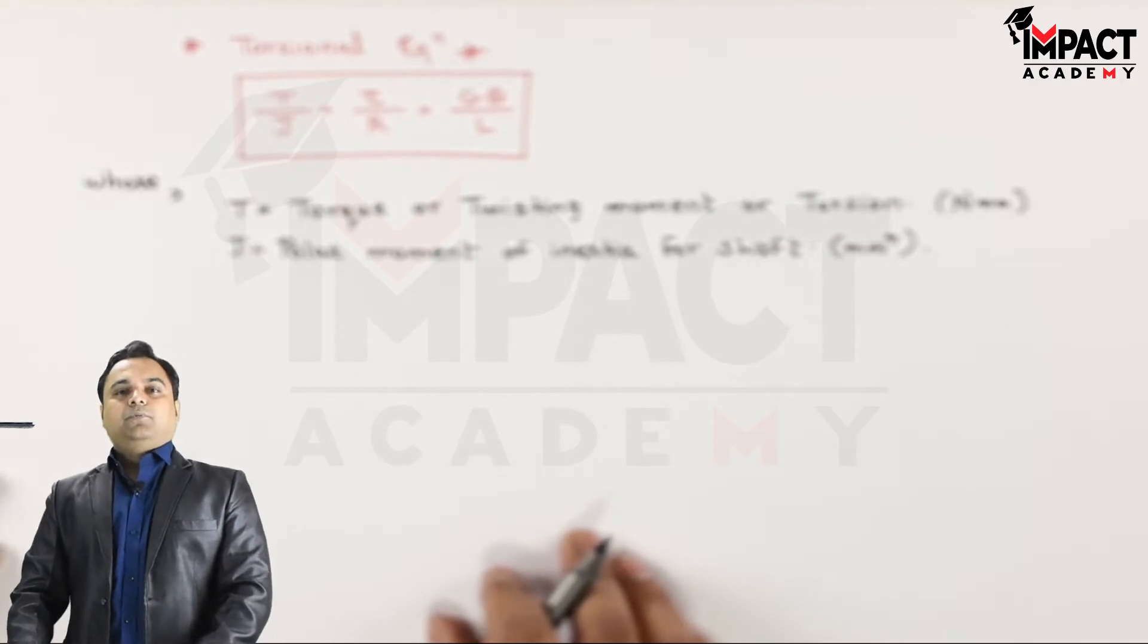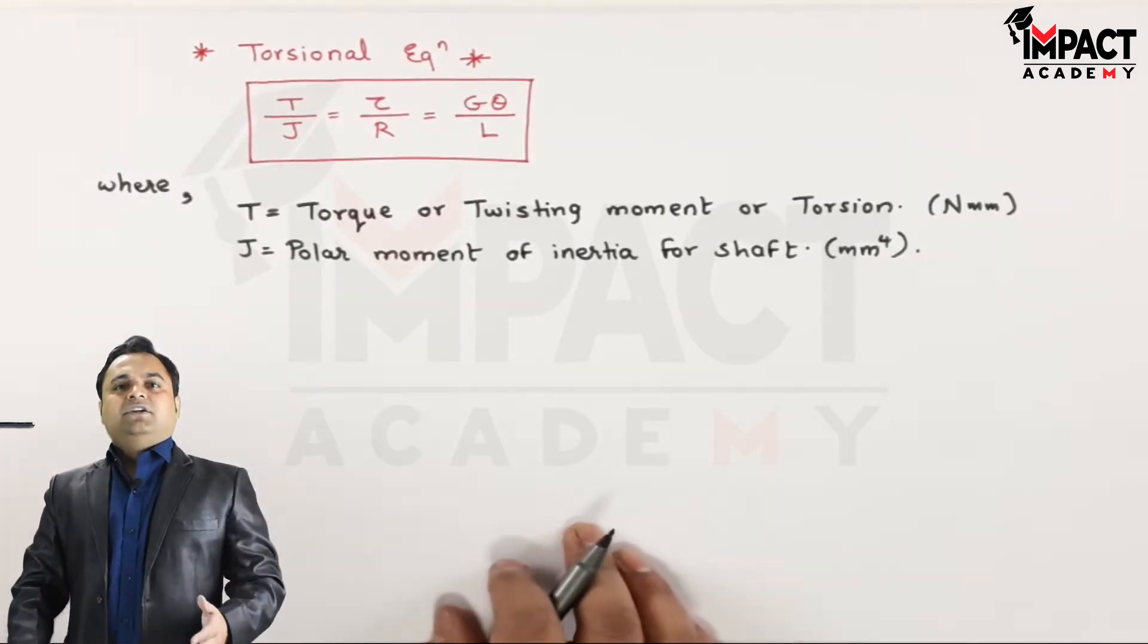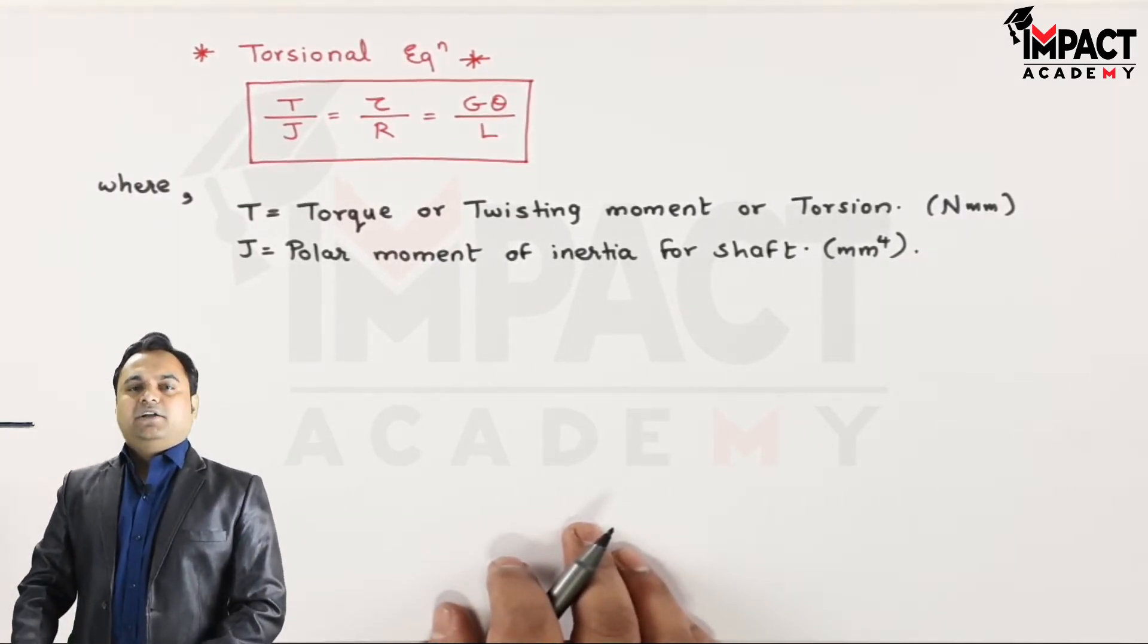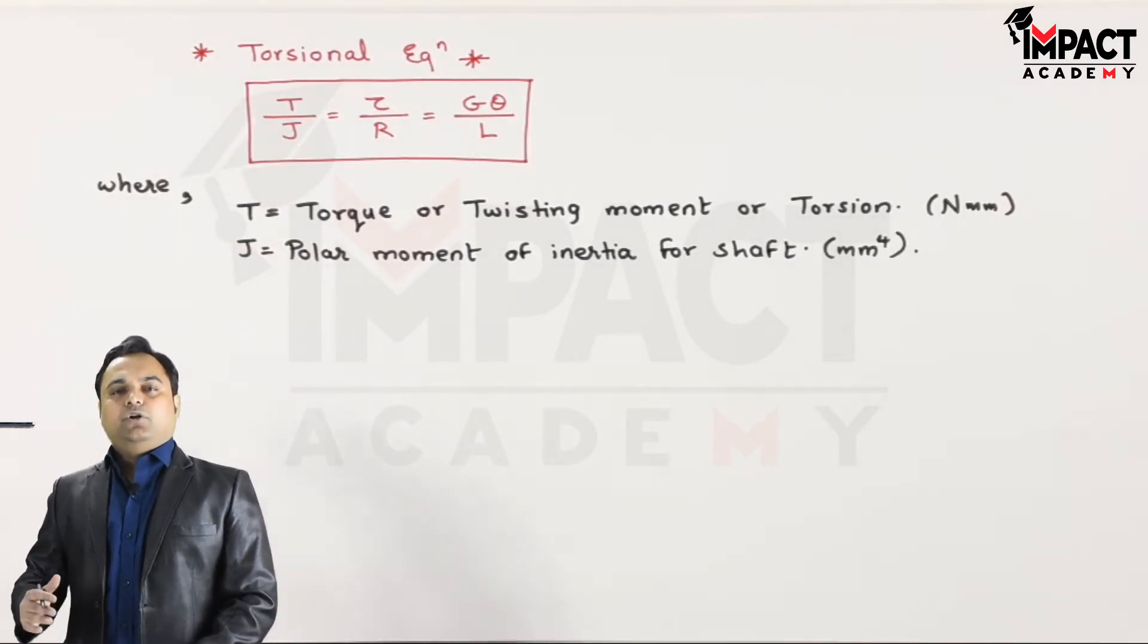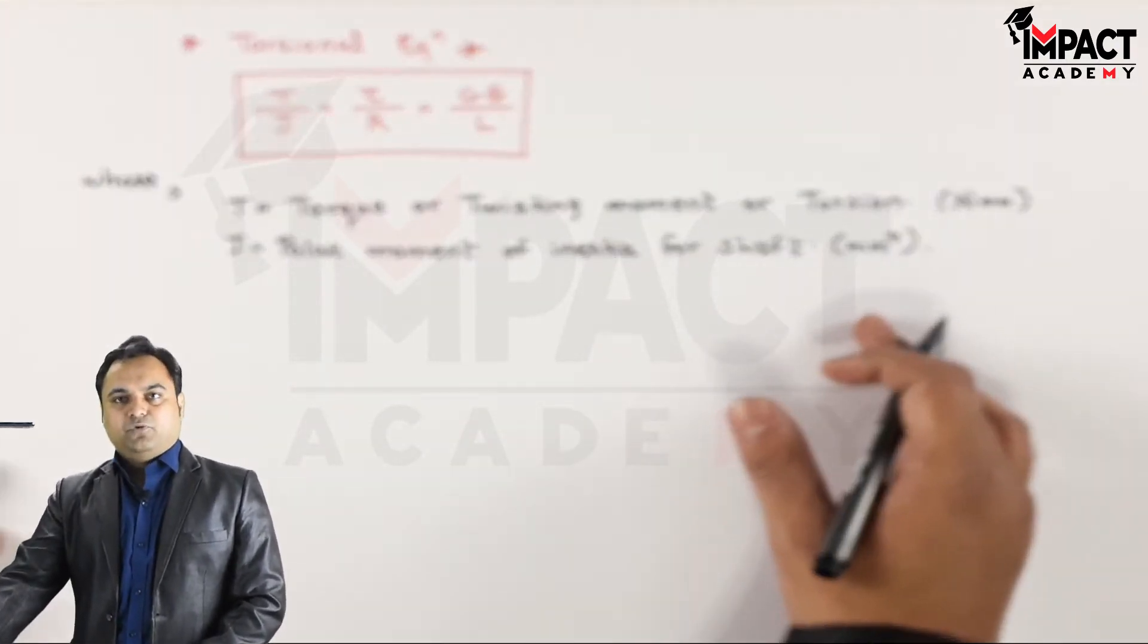So J is the polar moment of inertia for the shaft, and J would change depending upon whether it is a solid shaft or a hollow shaft, and the unit is millimeters raised to 4. Next tau.